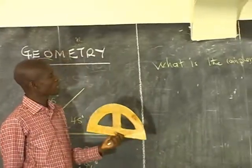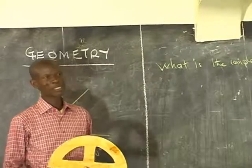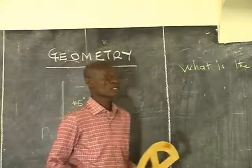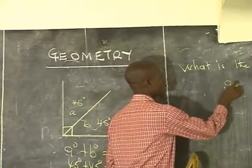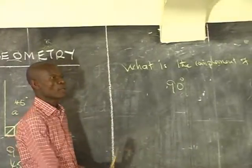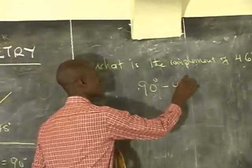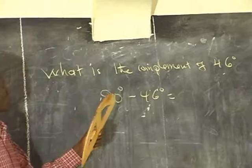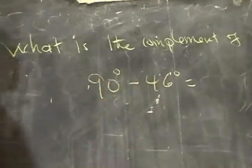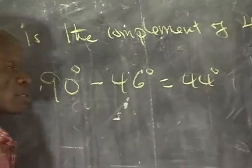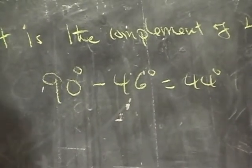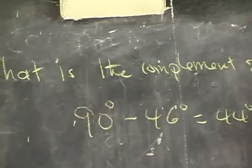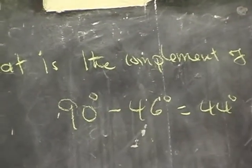We know that complementary angles are angles which are adding up to 90 degrees. So to get the complement of 46 degrees, we need to take the sum of the complementary angles, which is 90 degrees, then take away 46 degrees. When you take 46 from 90 you get 44 degrees. So the complement of 46 degrees is 44 degrees.